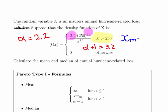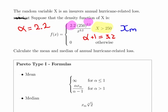So it's a bit of deduction to say that this is the Pareto Type 1 distribution, but essentially once you're familiar with these and you're sort of expecting them, you should expect it. Calculate the mean and median of the annual hurricane-related loss.